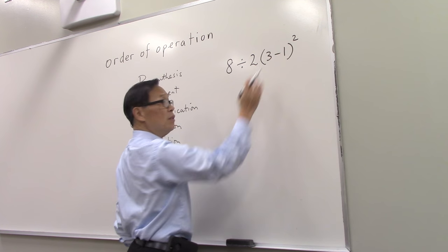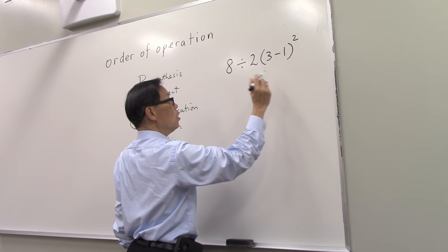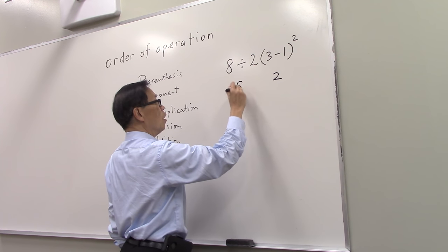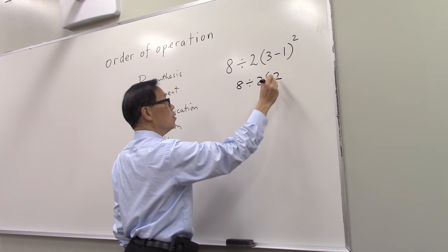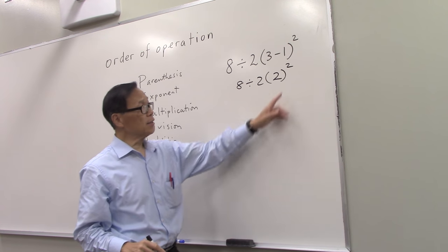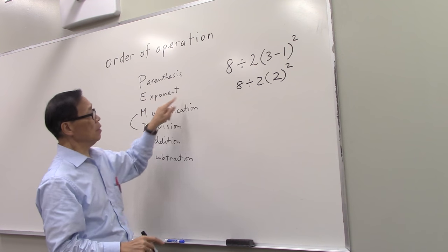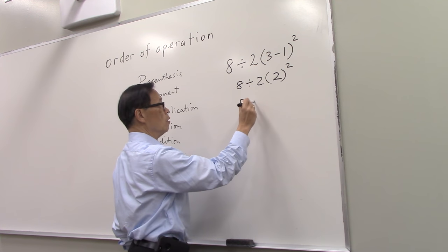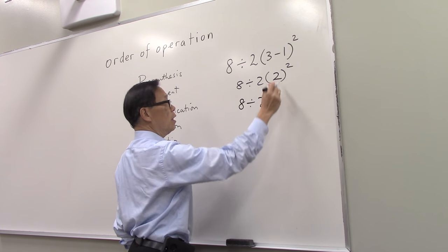You do what's in the parentheses. So 3 minus 1 is 2. Alright, let's rewrite everything so we keep track. Now, what is next? Next is the exponent. So we say 2 squared is 4.